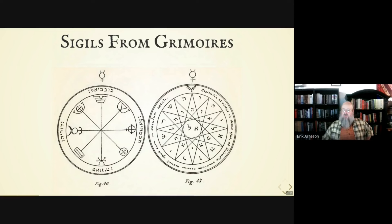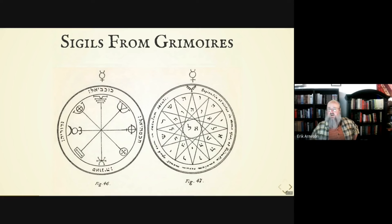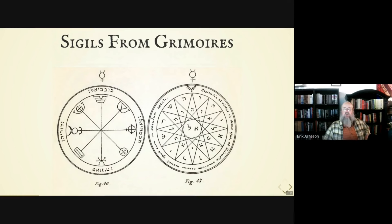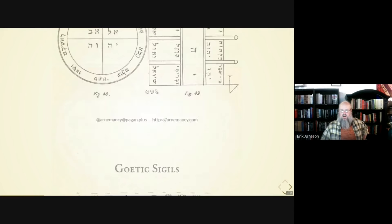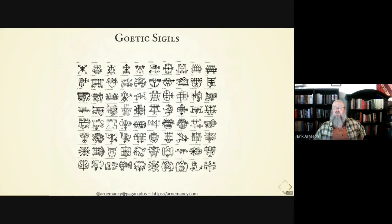With any of these grimoire sigils, the book they came from typically has instructions on how to use them. But modern practitioners have adapted them in a lot of interesting ways. For instance, the sigils from the Key of Solomon get used in a lot of American folk magic — typically printed out or traced on paper with petitions written on the back, then consecrated with holy oils, candles, and incense. I know people are doing a lot of really interesting things with Goetic sigils. I've got friends who have used Goetic spirits and Goetic sigils to do things like help hunt for housing.